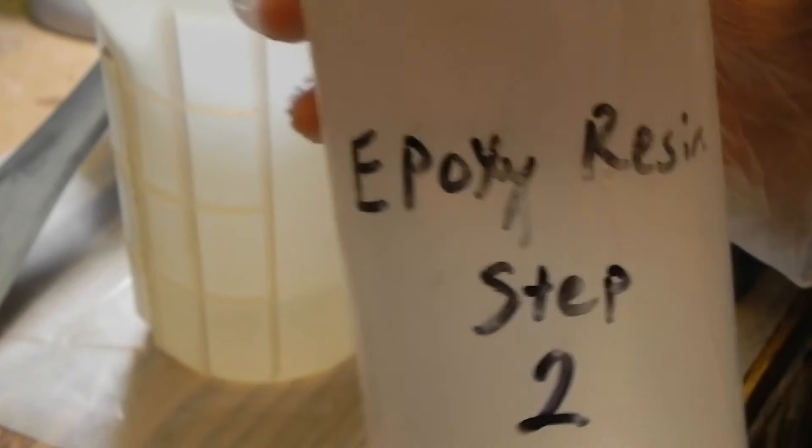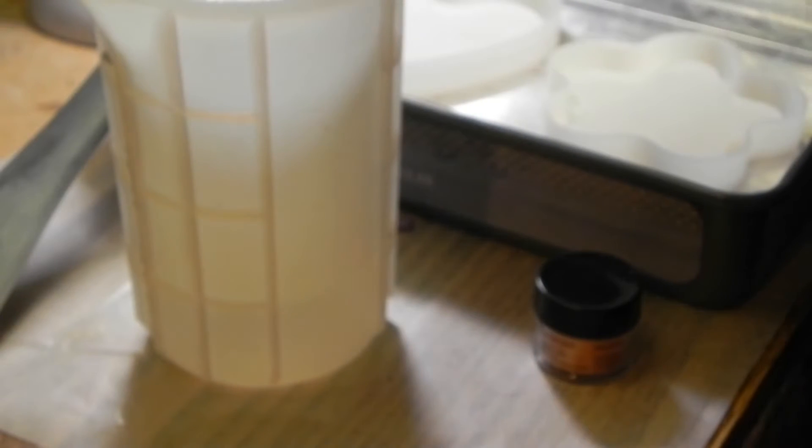Next I add an equal volume of resin, bringing it up to the 400 milliliter mark. Proper portions are critical. If the ratio is off, the resin will not cure properly. So take your time here and don't guess. Use the markings.